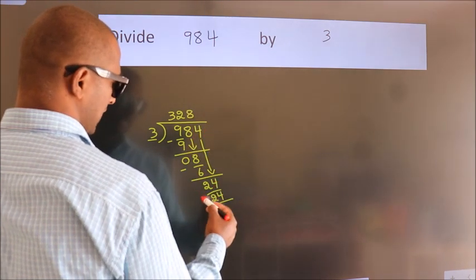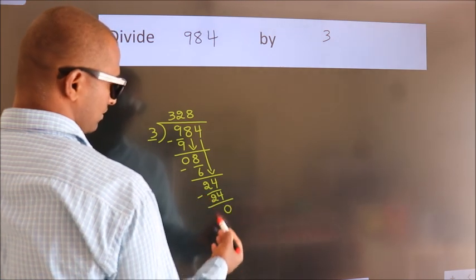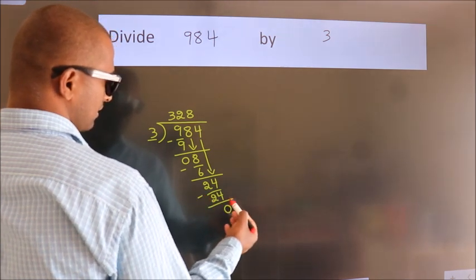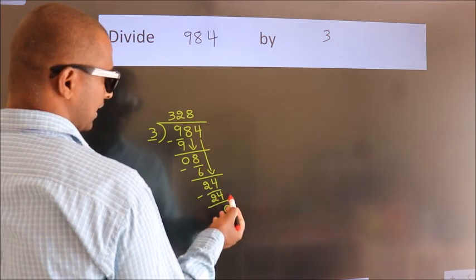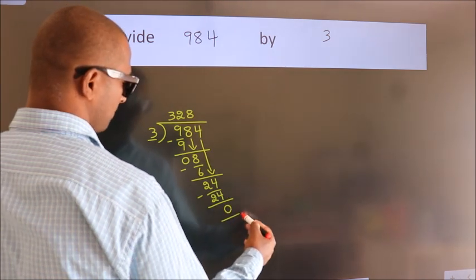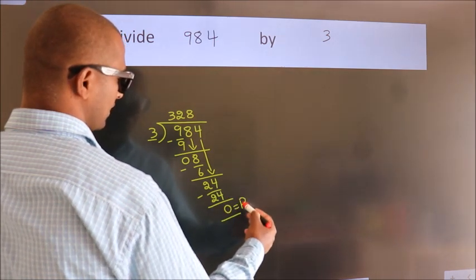Now, we subtract. We get 0. After this, no more numbers to bring it down. So, we stop here. This is our remainder. This is our quotient.